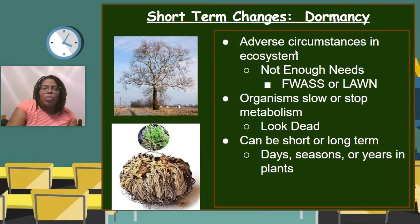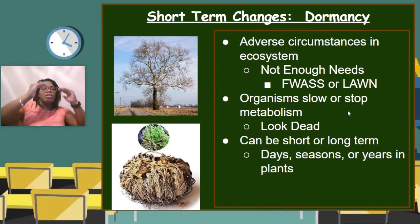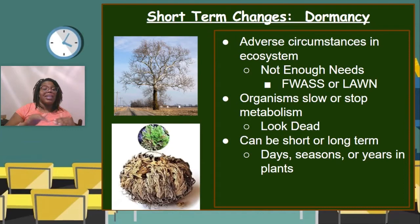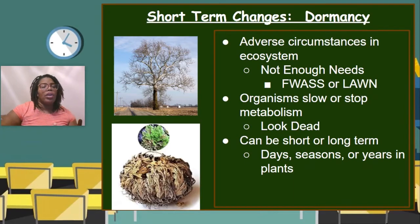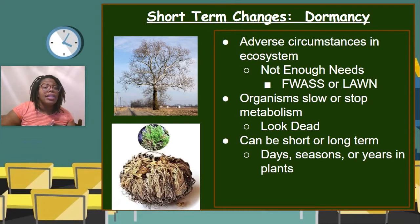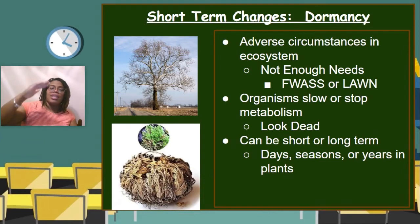When dormancy is the adaptation, the organism is going to slow down its metabolic processes, and sometimes stop them completely. By metabolic processes I mean all the processes the organism needs to stay alive — digestion, excretion, respiration, photosynthesis, growth. During this time, those processes slow way down or stop altogether so the organism doesn't use as much energy to stay alive.